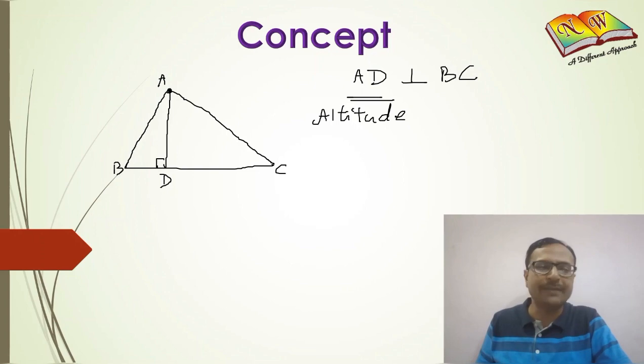So how many altitudes can we draw in a triangle? I have used the vertex A to draw the altitude AD. Similarly, you can draw another altitude from vertex B like this where the altitude BE will be perpendicular to the side AC, and so BE is also the altitude. Likewise, from C I can draw another altitude like this making an angle of 90 degrees with AB.